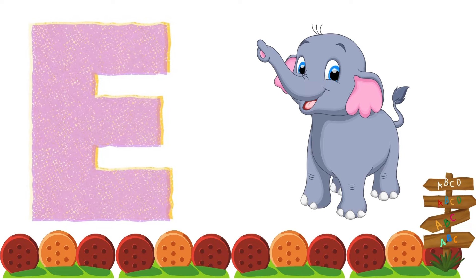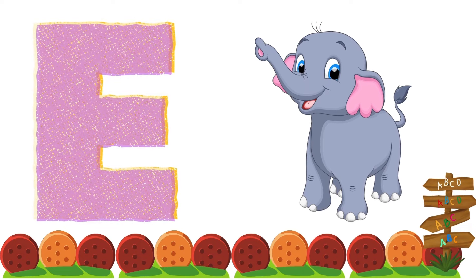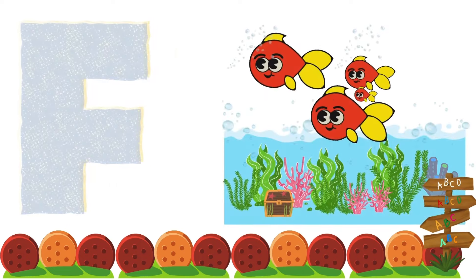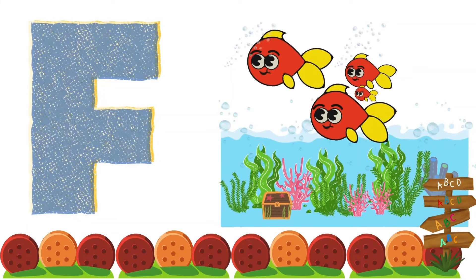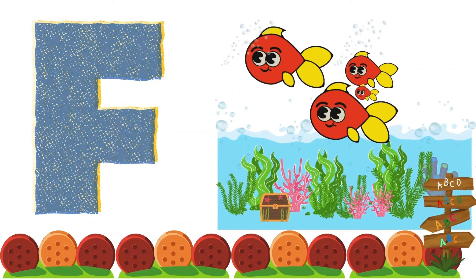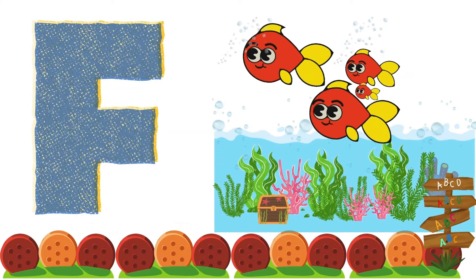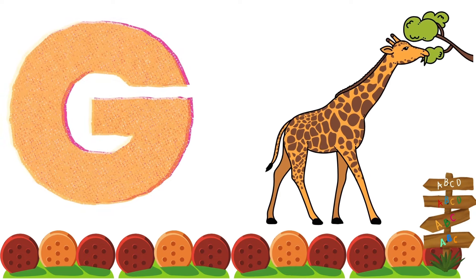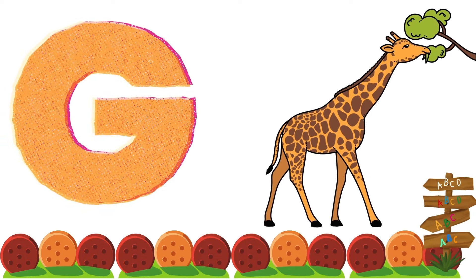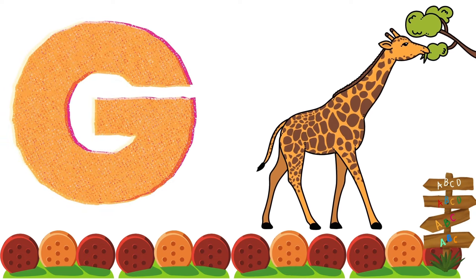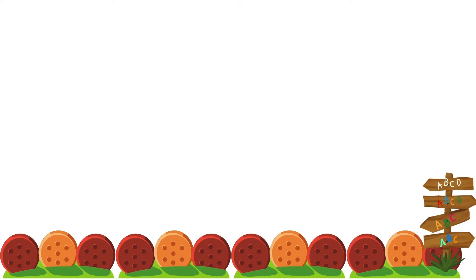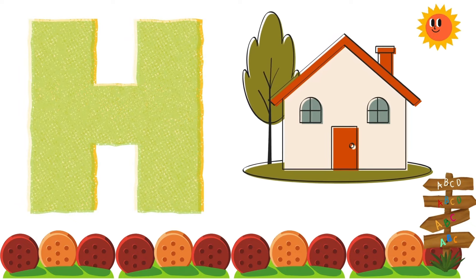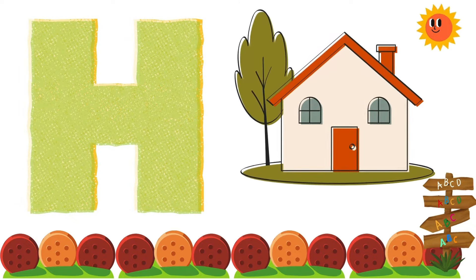E is for Elephant. F is for Fish. G is for Giraffe. H is for House.